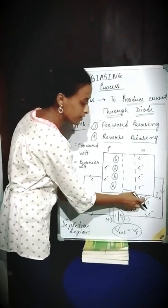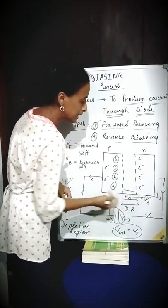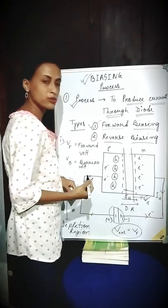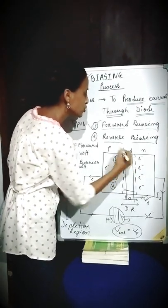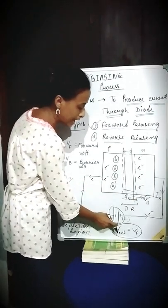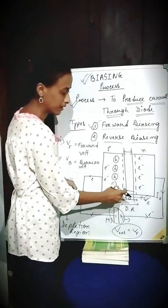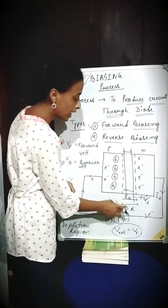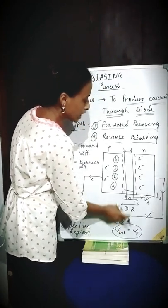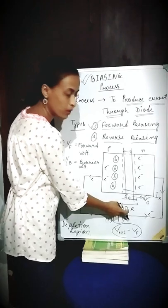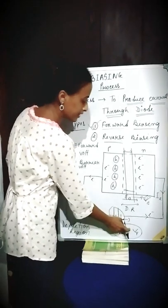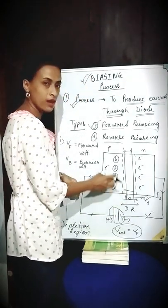And once this barrier potential gets reduced, then the width of the depletion region also gets reduced. And this process — where the externally applied voltage is supporting the biasing — means that whenever the externally applied voltage reduces the barrier potential, and thereby reduces the width of the depletion region, then that whole process indicates that the externally applied voltage is supporting the biasing process.